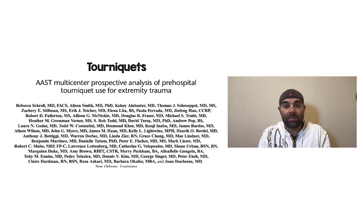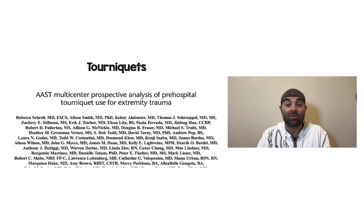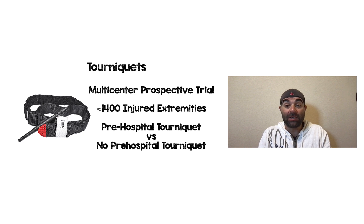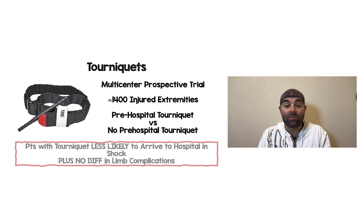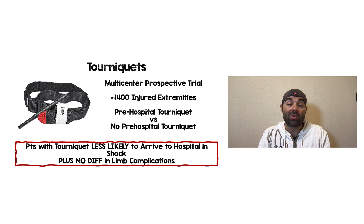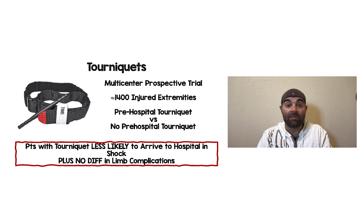Tourniquets are an underappreciated asset, especially in the pre-hospital setting where we just don't have as many resources. This was a multi-center prospective analysis of pre-hospital tourniquet use for extremity trauma — basically 1,400 injured extremities. It was observational, not randomized, but they wanted to see the impact of applying a tourniquet pre-hospitally versus not. What they found is that patients who had tourniquets applied early were less likely to arrive to the hospital in shock, and there was no difference in limb complications from the tourniquets themselves. An undervalued asset — something we should definitely be using and talking to our pre-hospital colleagues about.